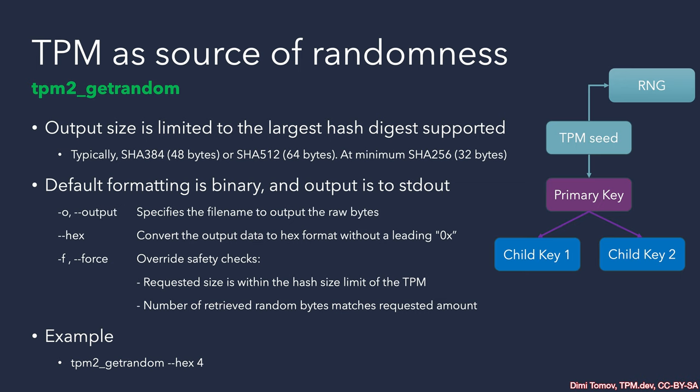The tool has a fairly standard set of options. By using -o, we can have the output stored in a file instead of going to standard output. By using --hex, we can have it in hex format. Something special about this tool is the presence of -f for forcing to overwrite safety checks. Essentially, you would not receive any random bytes if they are not the exact amount requested. This is very rare — it would indicate some kind of malfunction or you've tried to exceed the supported hash digest size, such as trying to generate 80 bytes when the TPM can provide only 64 at once.